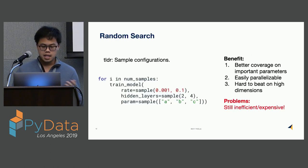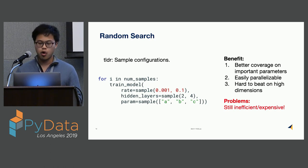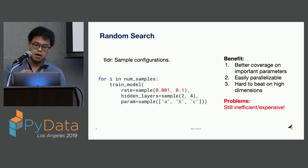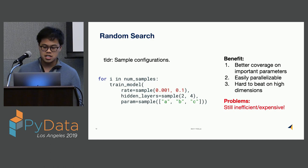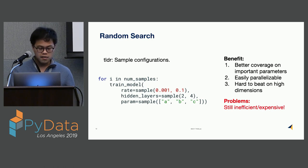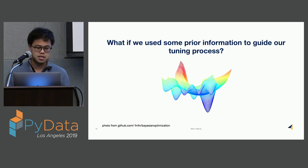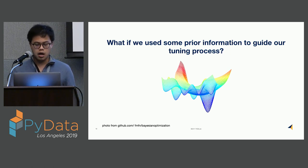Random search is very simple — you basically sample configurations over a set distribution over and over again. It's up to the user to specify the distribution. It provides better coverage than grid search and is easily parallelizable, since each evaluation is an independent sample. It turns out that in high dimensions it's very hard to beat random search. However, one thing we can do better is use prior information from evaluated training runs to guide our tuning process — and this is exactly what Bayesian optimization does.